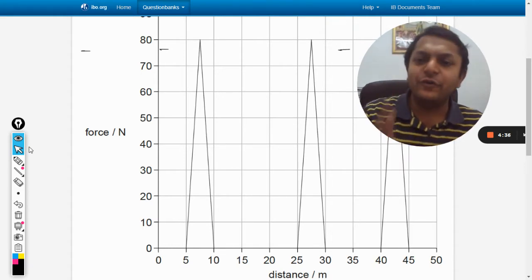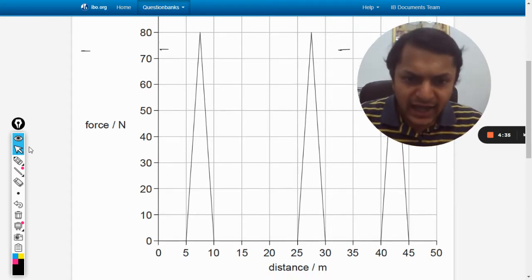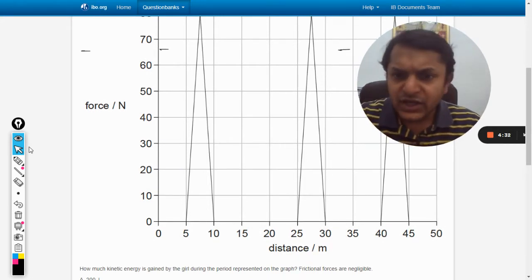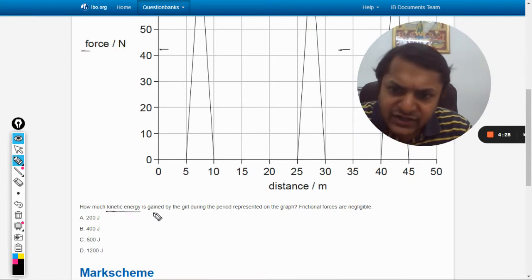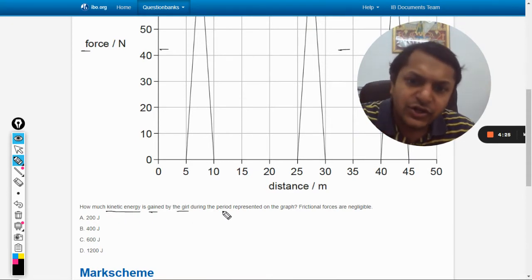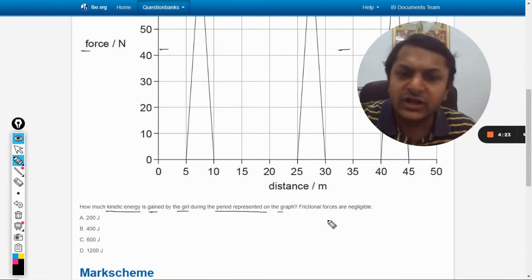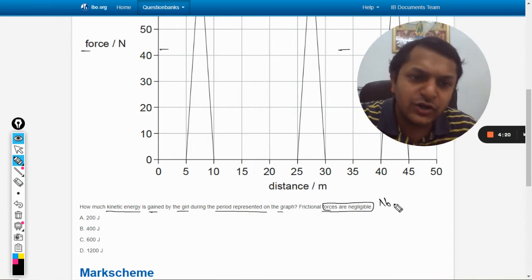On the y-axis you have force and the unit is Newton. On the x-axis you have distance, the unit is meter. The question is: how much kinetic energy is gained by the girl during the period represented on the graph? Frictional forces are negligible, so there are no losses.